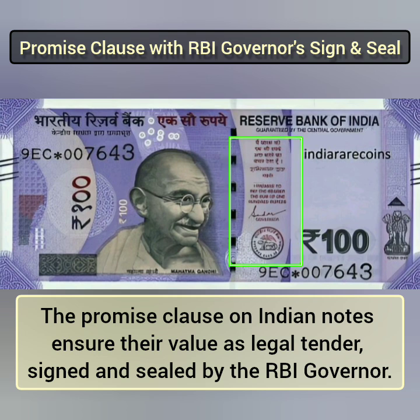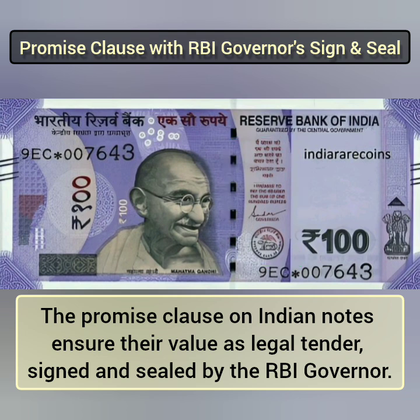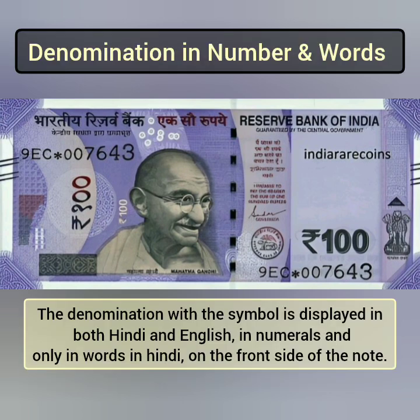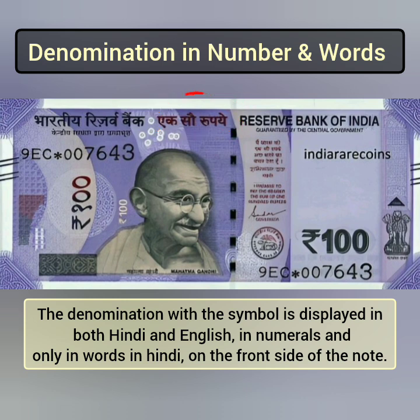Promise Clause with RBI Governor's signature and seal. The promise clause on Indian notes ensures their value as legal tender, signed and sealed by the RBI Governor. The RBI Governor's signature may vary depending on who held the position at the time the note was issued. The denomination with the symbol is displayed in both Hindi and English, in numerals and in words in Hindi on the front side of the note.